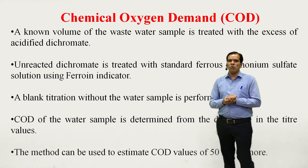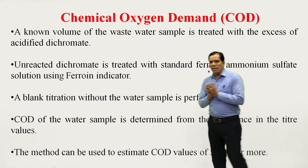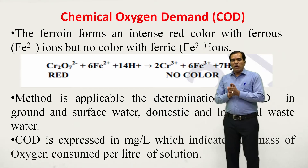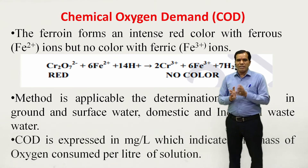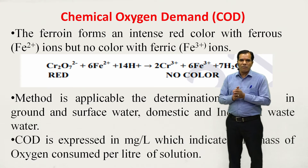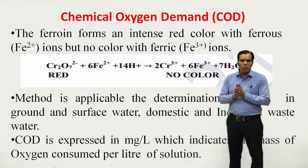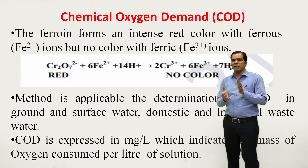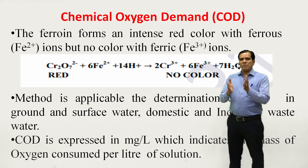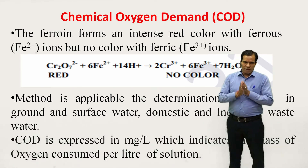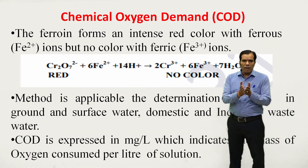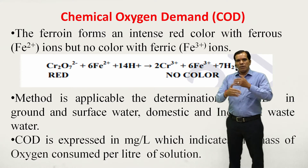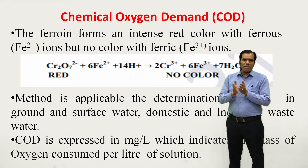This method can be used to estimate COD values of 50 mg/L or more. Ferroin indicator forms an intense red color with ferrous ions (Fe²⁺) but no color with ferric ions (Fe³⁺). The end point of this titration is therefore a red color. Initially the solution color will be blue-green, but after completion of the reaction we will get a red color.